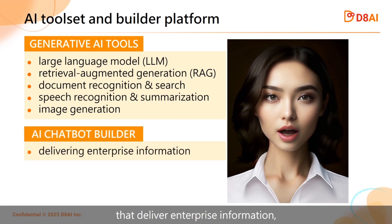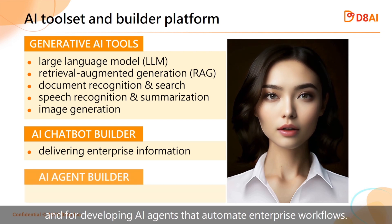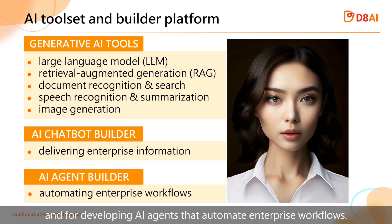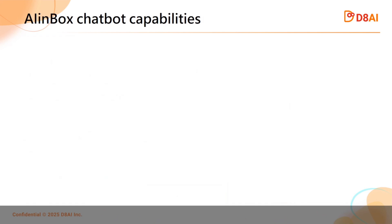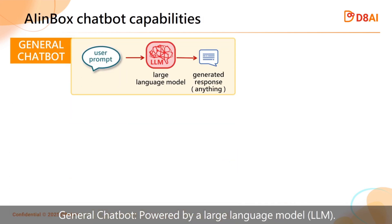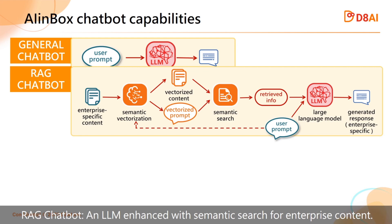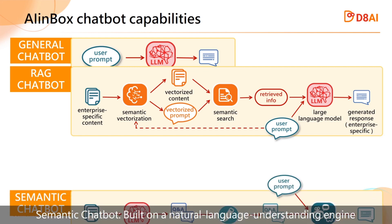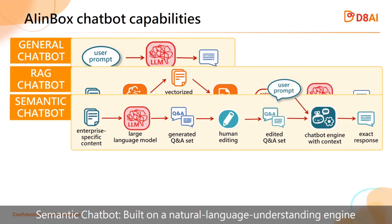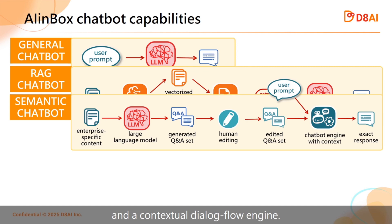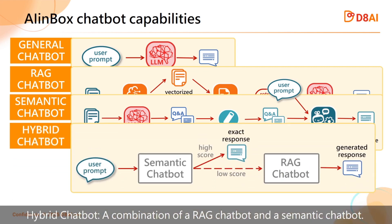AI Inbox offers a robust platform for building AI chatbots that deliver enterprise information and for developing AI agents that automate enterprise workflows. It supports four types of chatbots: a general chatbot powered by an LLM, a RAG chatbot — an LLM enhanced with semantic search for enterprise content, and a semantic chatbot built on a natural language understanding engine and a contextual dialogue flow engine.